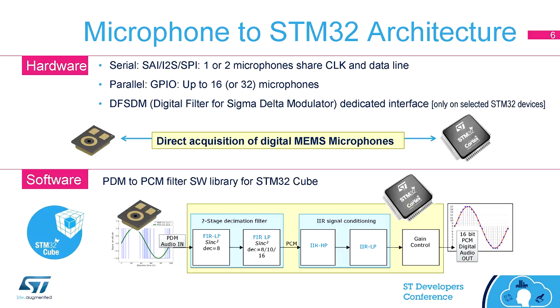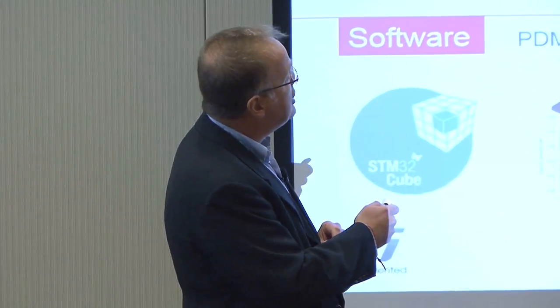Through a dedicated peripheral, the STM32 can convert PDM to PCM. For all other devices, there is a PDM-to-PCM filter library that is part of the standard STM32Cube distribution, implementing conversion from PDM format to the familiar 16-bit per sample PCM audio standard. The parallel interface using GPIO can enable us to build microphone array architectures that are very effective with a simplified bill of materials.